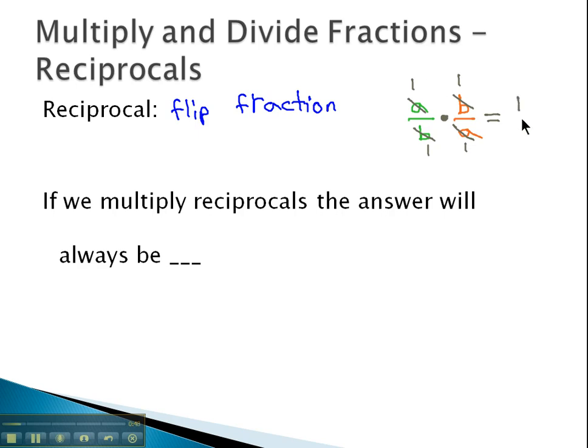This means we have 1 times 1 or 1 over 1 times 1 or 1, and 1 divided by 1 is simply 1. What this means is that if we multiply reciprocals together, the answer will always be 1.